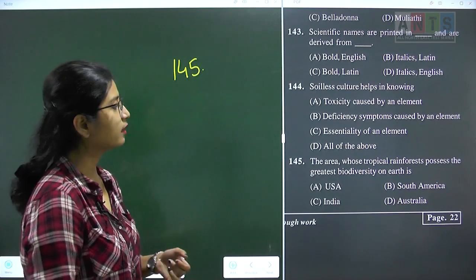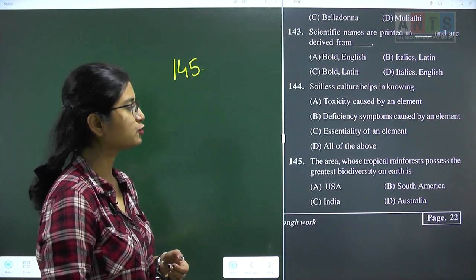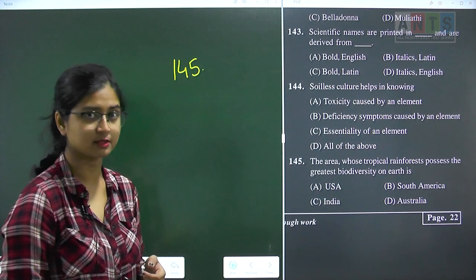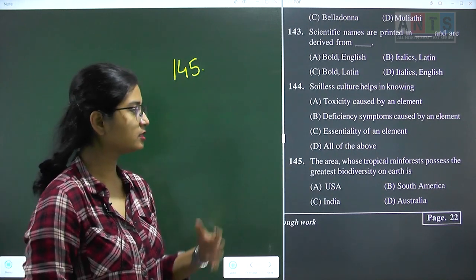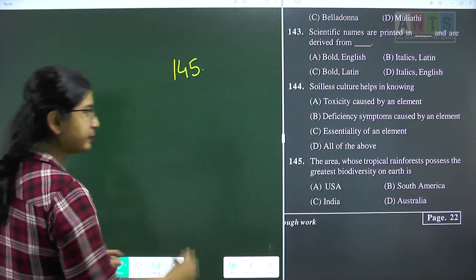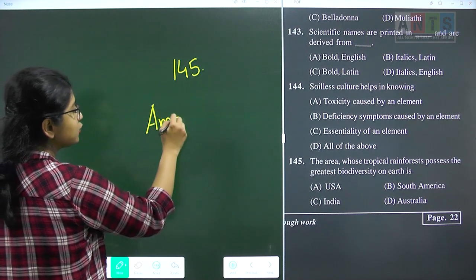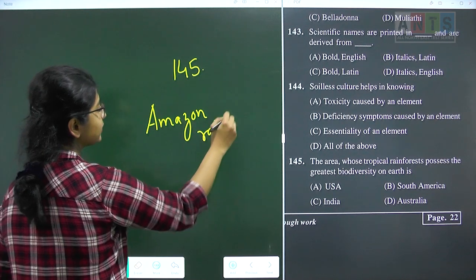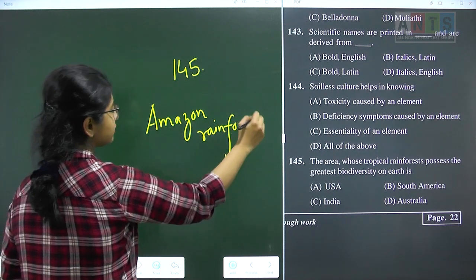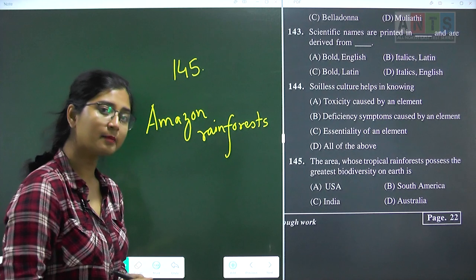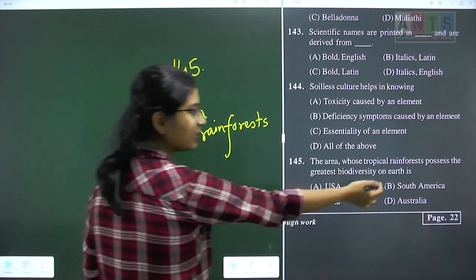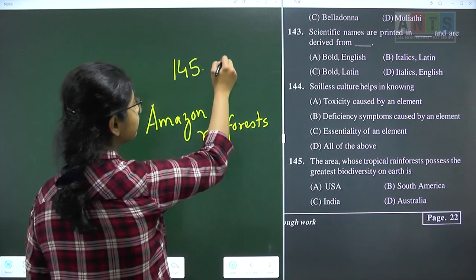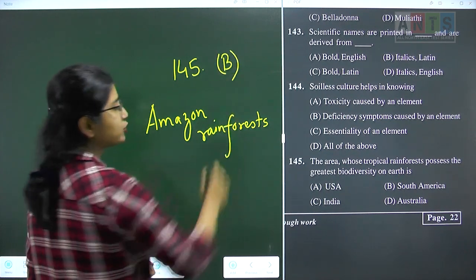Question 145: the area whose tropical rainforests possess the greatest biodiversity on earth. The tropical rainforests containing a major portion of earth's biodiversity are the Amazon rainforests, located in South America. Question 145 answer is option B.